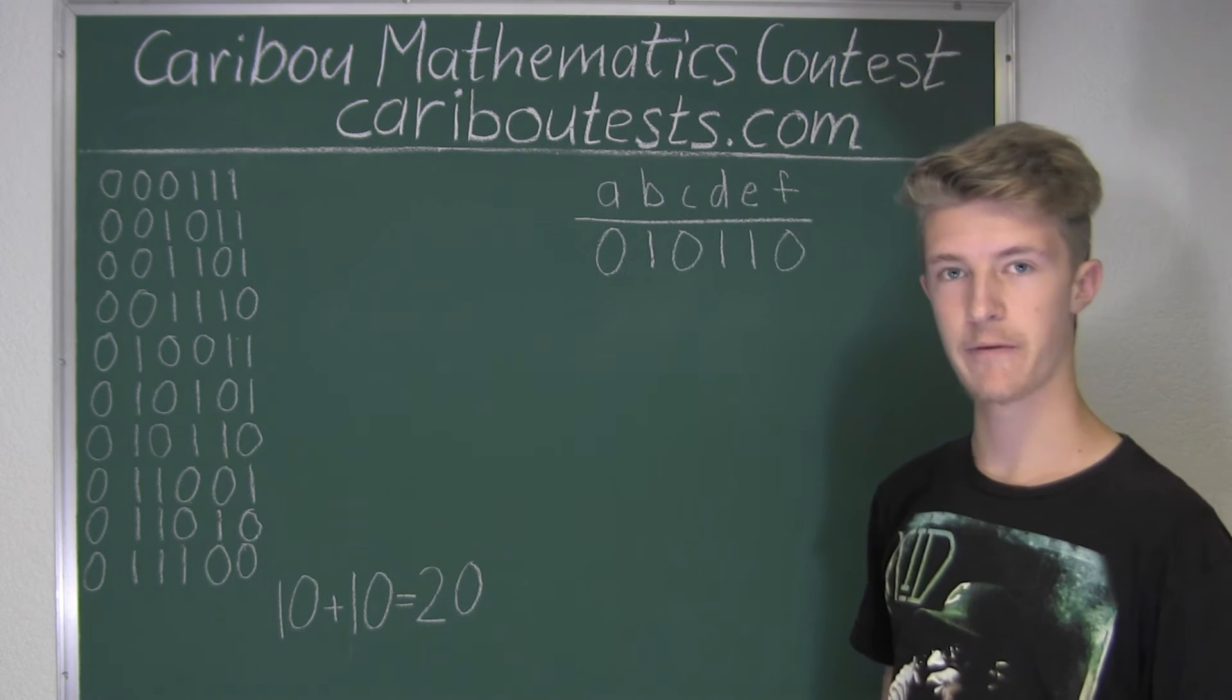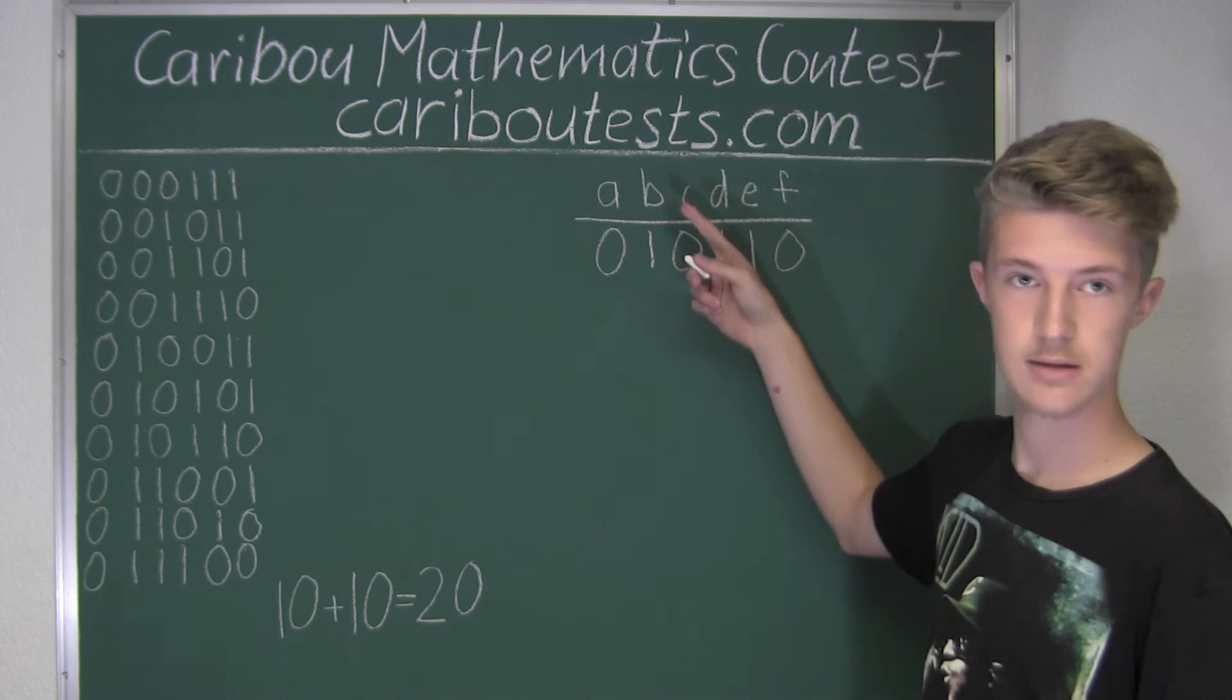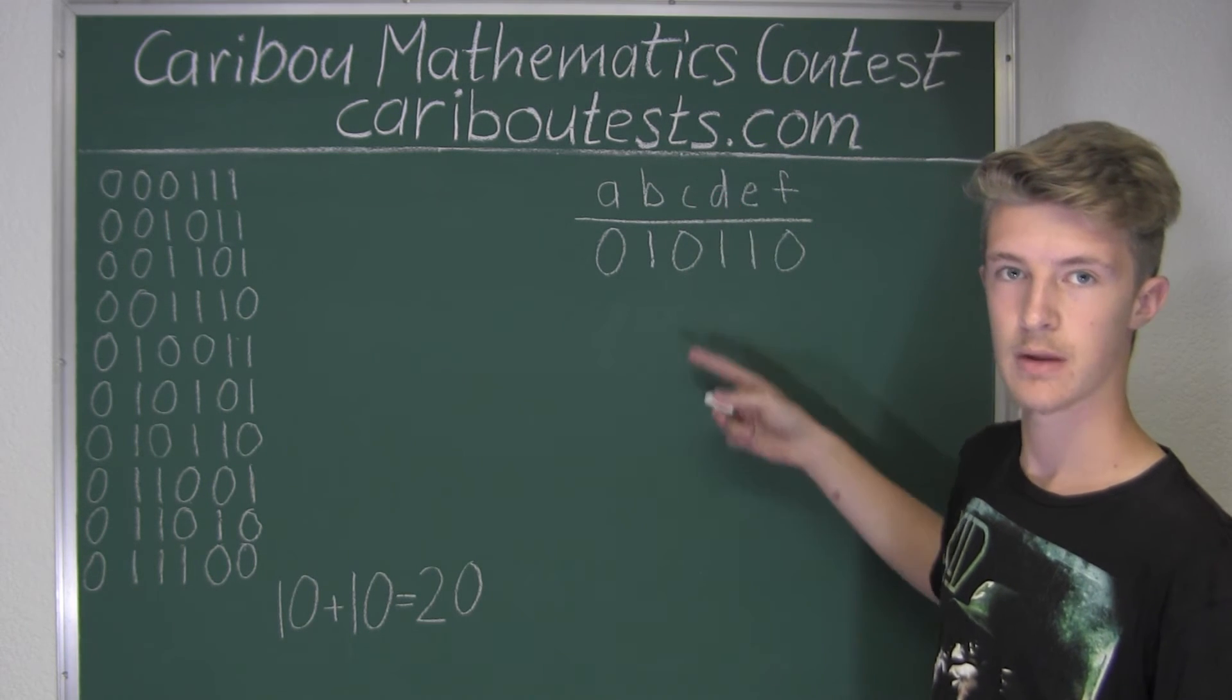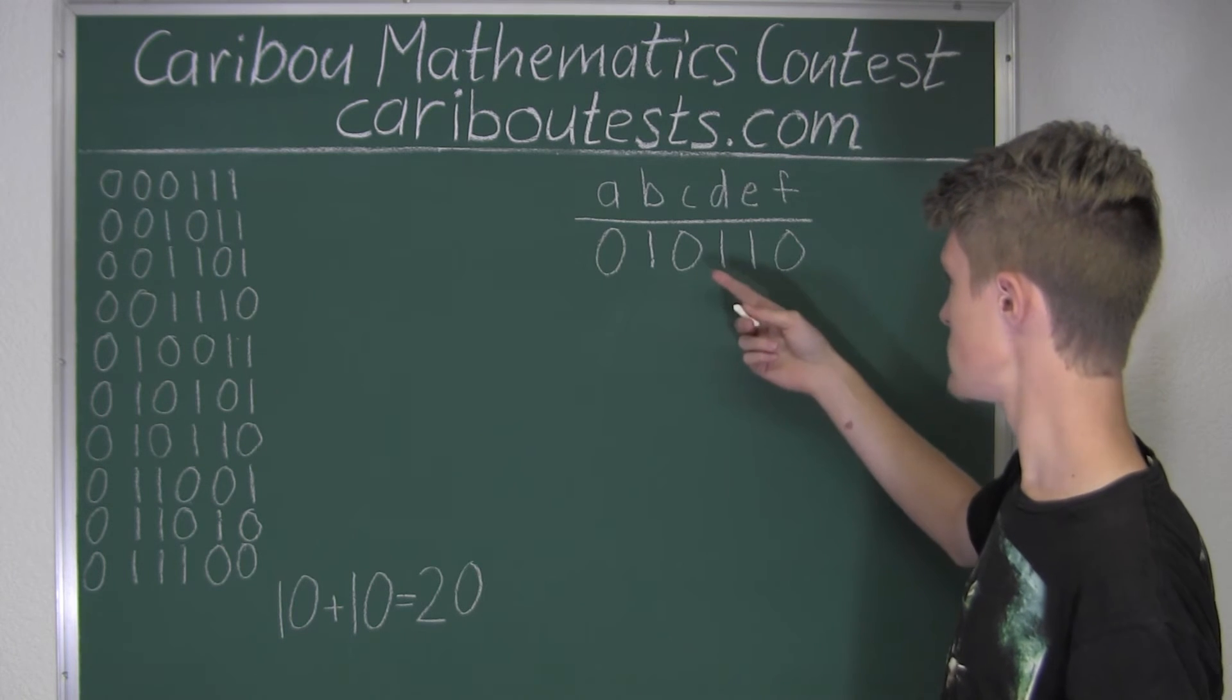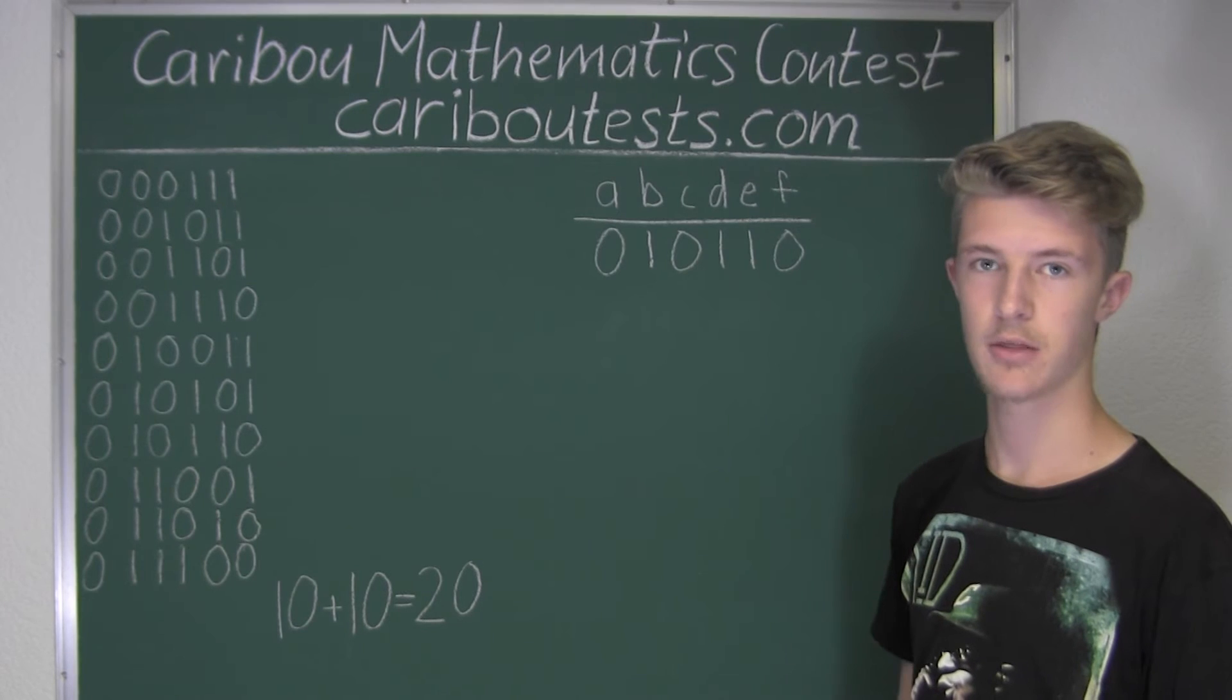So therefore, if we found out all possible pickings of these three letters, we would find all the sequences, all different sequences of three 1s and three 0s.